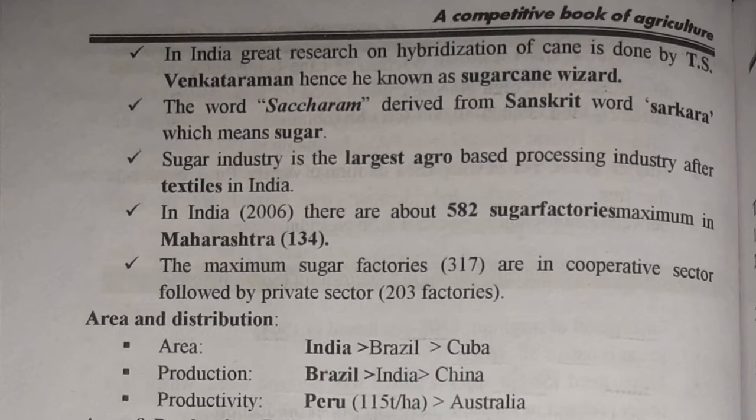Sugar industry is the largest agro-based processing industry after textile in India. In 2006 in India, there were about 582 sugar factories, maximum in Maharashtra, that is 134. Out of these, 317 factories — that is maximum — come under the cooperative sector, followed by the private sector comprising of 203 factories.